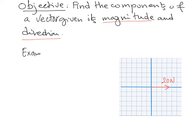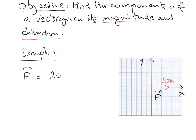Let's start with a very simple example shown on the right. This is a force of 20 Newtons applied in the positive X direction. So F is equal to a component along X: 20, with a plus because it's along the positive direction, times the unit vector I, which is the unit vector along X, plus zero times J.